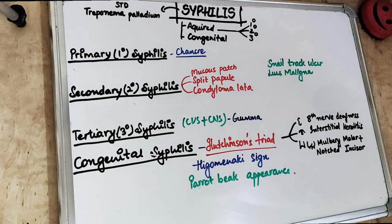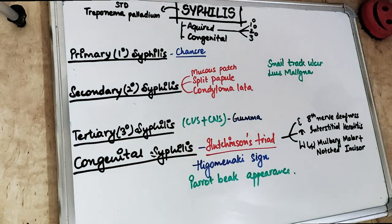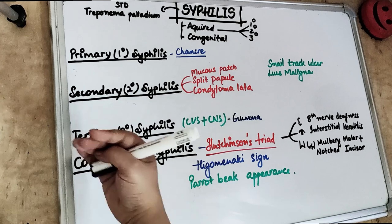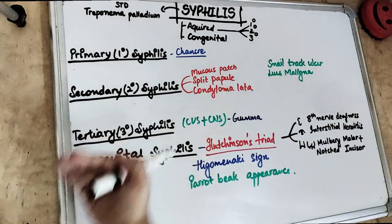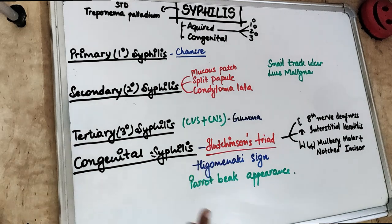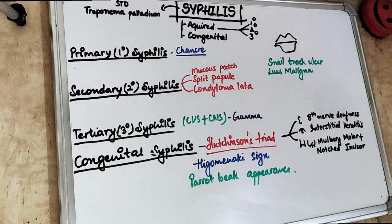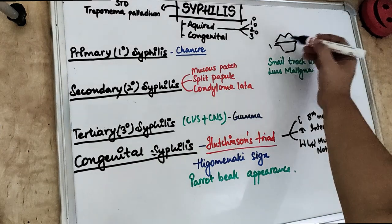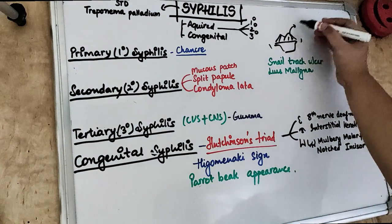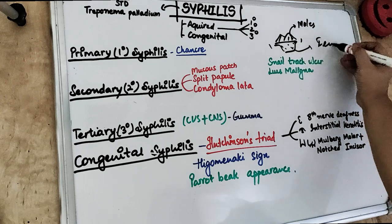Chancres are usually developed at the site of inoculation and there can be oral chancres also. After 6 weeks of having primary syphilis, if left untreated, the patient can progress to the secondary phase. For oral chancres, you can remember that chancres on the upper lip are usually seen in males and chancres on the lower lip are usually seen in females — usually, not always.